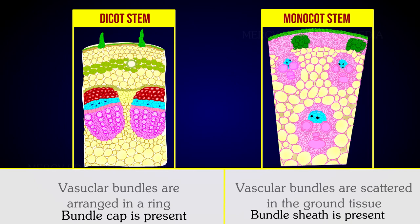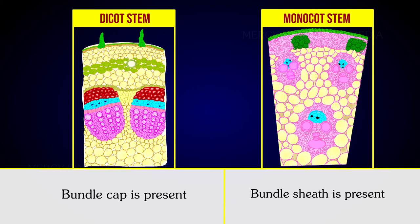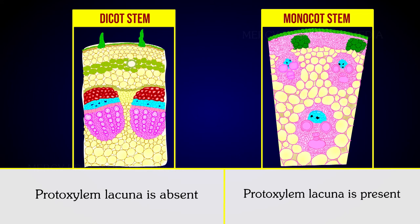Bundle cap is present in dicot stems. Bundle sheath is present in monocot stems. Protoxylem is present in monocot stems.